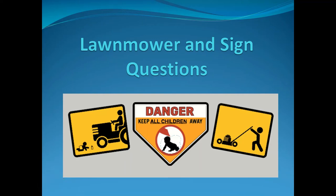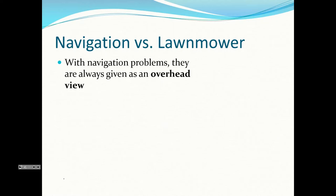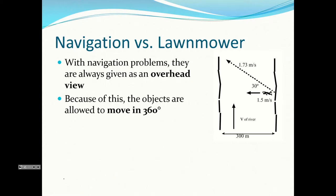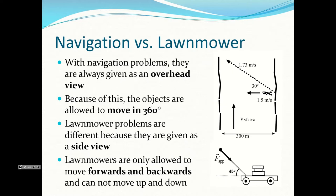We're going to do lawnmower and sign questions, which are specific 2D questions. They're not all lawnmowers and signs, but it helps you identify the problems. You need to know the difference between navigation problems, which we did last lesson, and lawnmower problems. Navigation problems are given as an overhead view, so objects can move in 360 degrees. Lawnmower problems are given as a side view, so lawnmowers can only go forwards and backwards — one dimension.